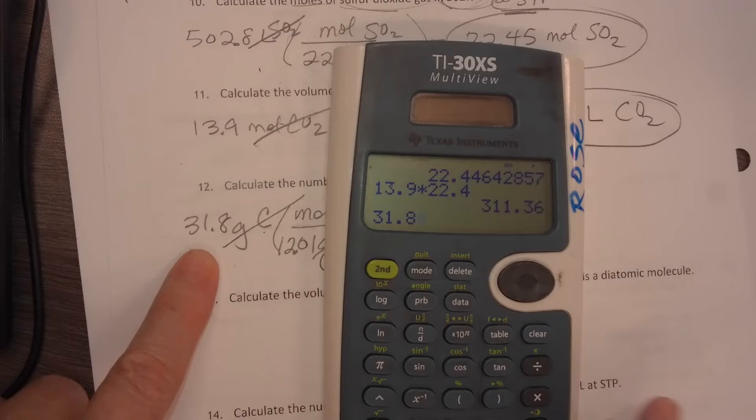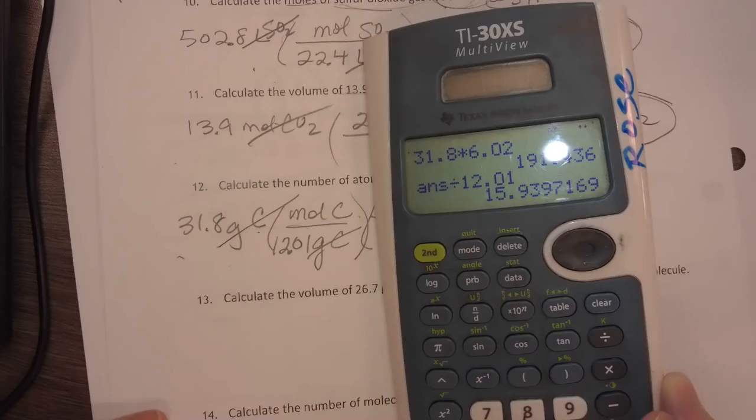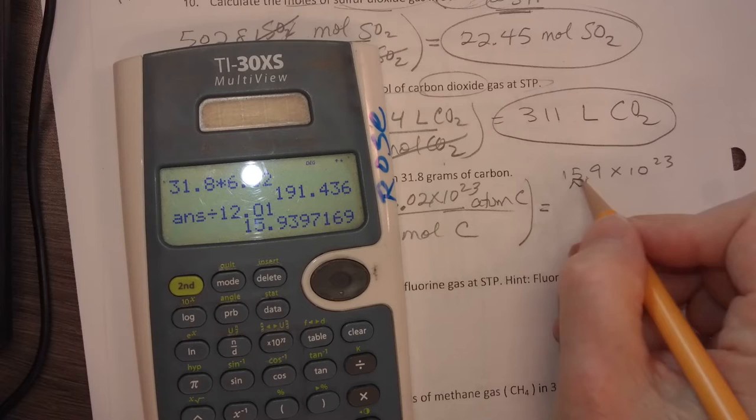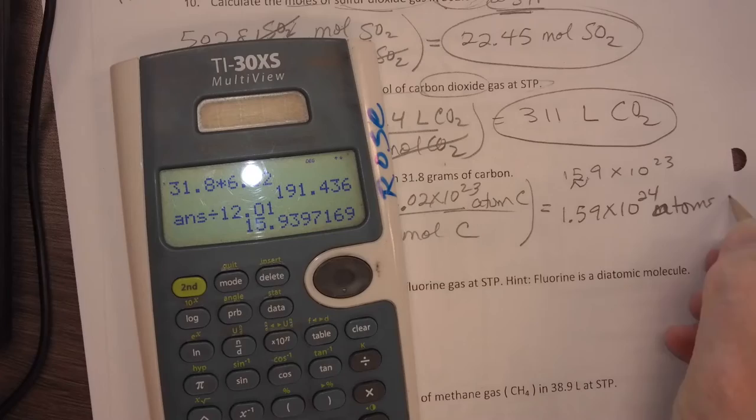So I'm going to pretend I don't have a fancy calculator. I'm going to say 31.8 times 6.02 divided by 12.01, and I get 15.9. I only want three significant figures. So that's 15.9 times 10 to the 23rd. I want to move the decimal over, so then I get 1.59 times 10 to the 24th atoms of carbon.